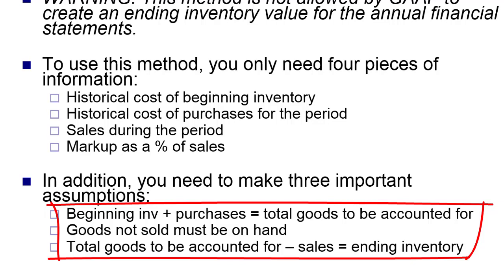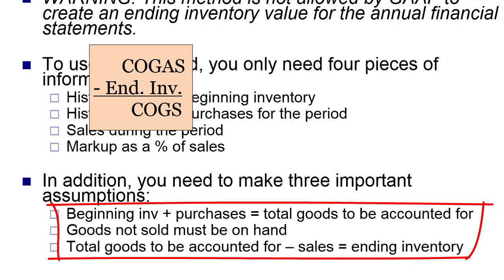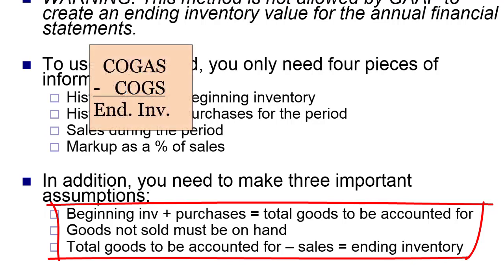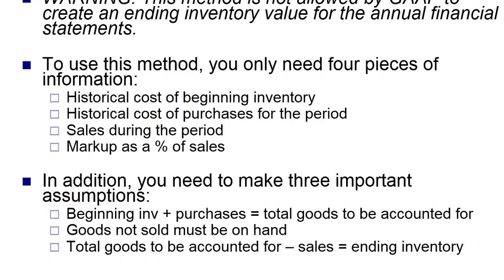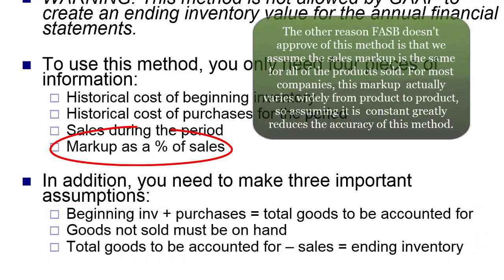That second assumption FASB has a bit of an issue with. What about theft or spoilage? What if things are still in transit? I'm making an assumption that if I don't have it on hand, then it must have been sold. It's part of the reason why we can't use this for annual statements. Finally, we flip around the cost of goods sold equation — total goods to be accounted for minus sales gives us ending inventory. We're also assuming that the markup is constant, which unless you sell only one product, is probably not very accurate.